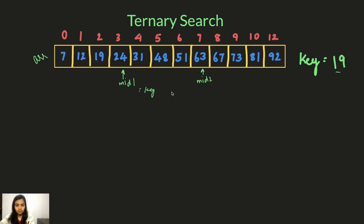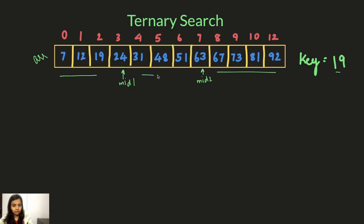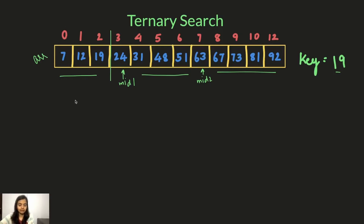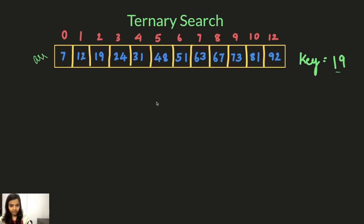If they are not equal to the key, we check whether the key is present in the left part, the middle part, or the right part of the array. In this example we want to find 19, so the key is in the left part, so we break the array there and apply ternary search on that sub-array again. We keep doing this until we finally find the element we're looking for.